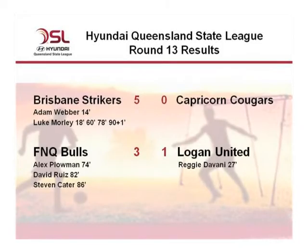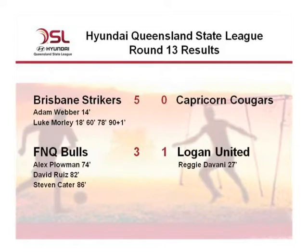In the other Round 13 results, a four-goal haul from Luke Morley was enough for Brisbane Strikers to see off Capricorn Cougars at Perry Park on Saturday night — 5-0 winners. In the other Saturday night clash, FNQ Bulls came from behind to beat Logan United 3-1, with three late goals from Alex Plowman, the returning David Ruiz, and Bulls leading goalscorer Stephen Cater securing the three points for the home side.